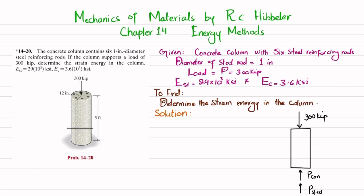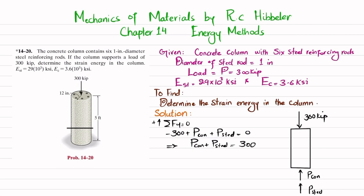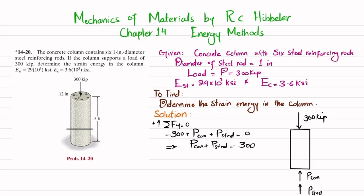We apply the equilibrium condition: the sum of all forces along the y-direction must equal zero. Taking upward forces as positive: minus 300 (downward) plus P_concrete plus P_steel equals zero. Therefore, P_concrete plus P_steel equals 300 kips. This is equation number 1.